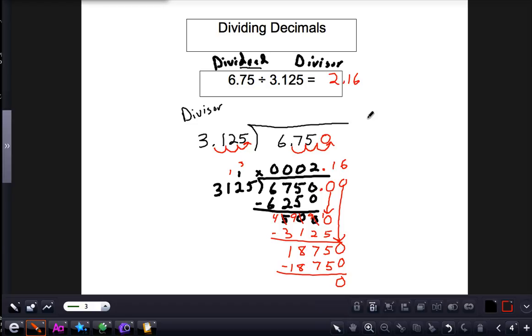We cannot have a decimal in the divisor, so move it to the right. Do the same thing to the dividend.